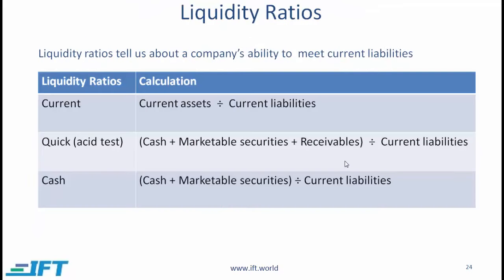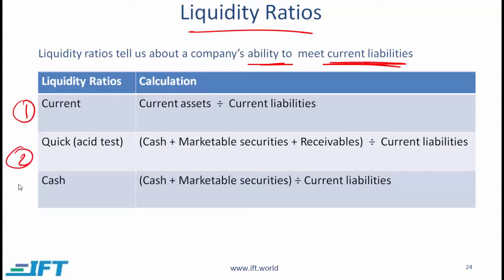Let's look at some important ratios now. There are two broad categories: the liquidity ratios, which we look at here, and solvency ratios on the next slide. Liquidity ratios tell us about a company's ability to meet current liabilities. There are three important liquidity ratios you need to know. The one quoted most often is the current ratio — all current assets divided by current liabilities.